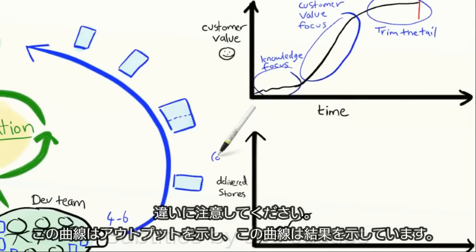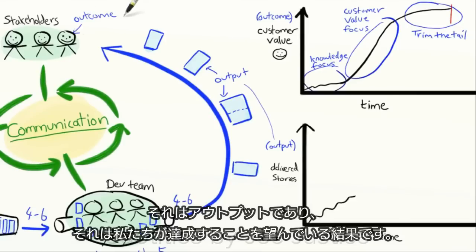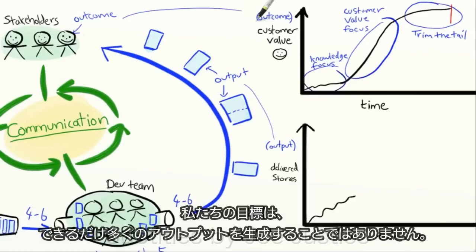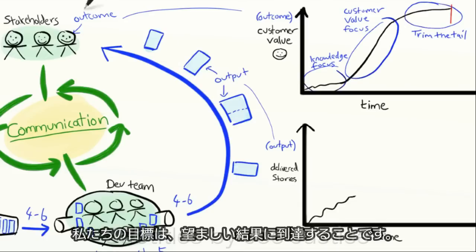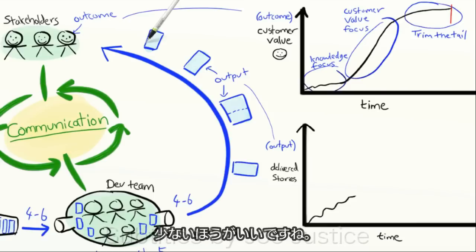Note the difference. This curve shows output. That curve shows outcome. That's the output, and that's the outcome that we hope it will achieve. Our goal is not to produce as much output as possible. Our goal is to reach the desired outcome: happy stakeholders, using the least possible output. Less is more.